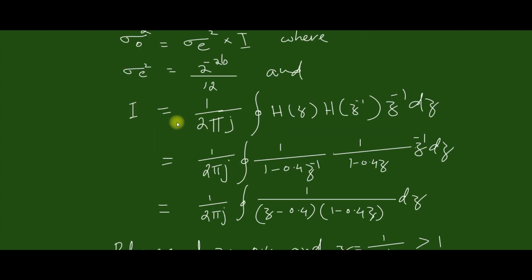And I is defined as 1/(2πj) contour integral over H(z)H(z⁻¹). Now substituting H(z) and H(z⁻¹) and simplifying we get this equation. We are multiplying the numerator and denominator with z, so z⁻¹ will become 1.